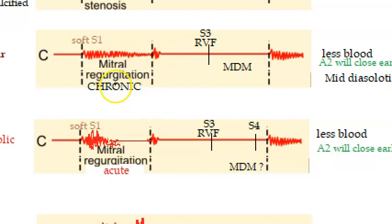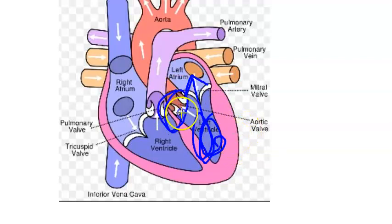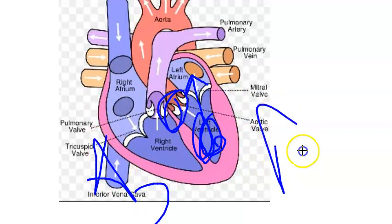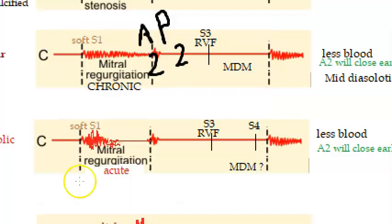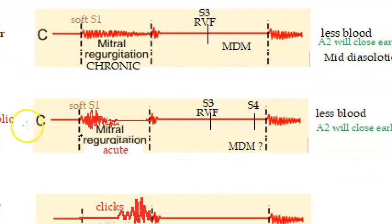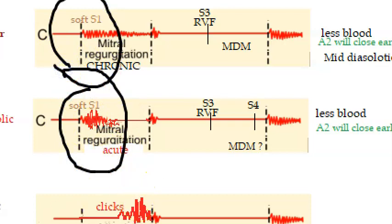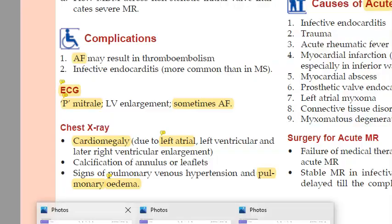Regarding S2, you have A2 and P2. Because of regurgitation, there is less blood in the left ventricle, so the aortic valve closes sooner. This produces a wide split S2. Wide split S2 is found in mitral regurgitation. Also, S1 will be soft because the mitral valve is weak — that is why there is regurgitation and a soft S1.